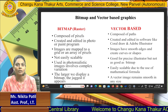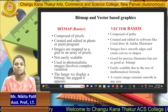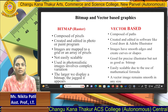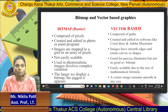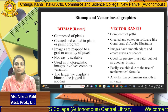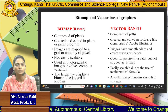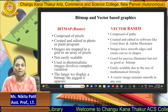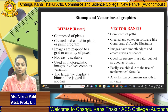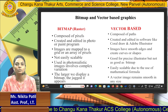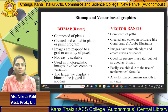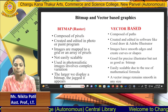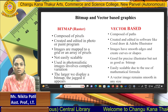Bitmap images are mapped to a grid or array of pixels. Vector-based images have smooth edges and well-defined curves. Bitmaps are not easily scalable because they are made of fixed pixel points at coordinate positions. Vector images are good for precise illustration and remain smooth at any size, while bitmaps degrade when enlarged.